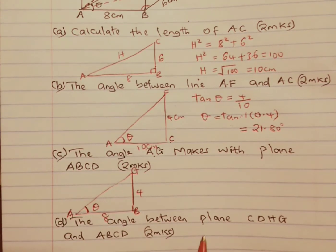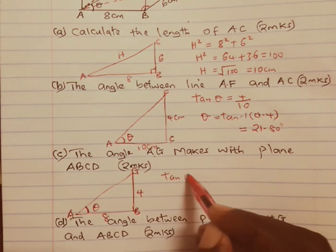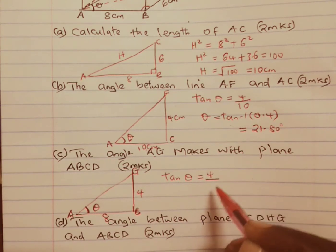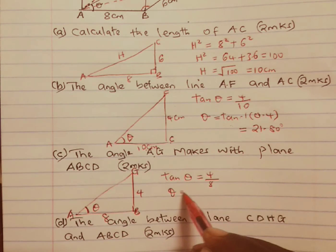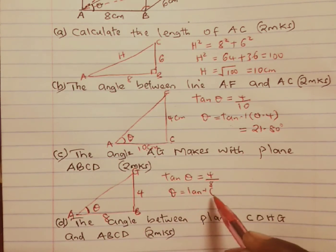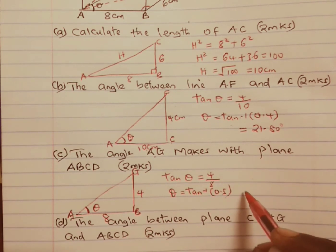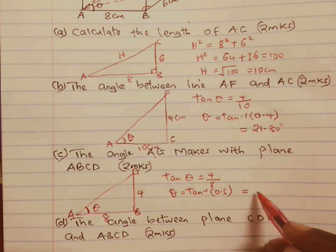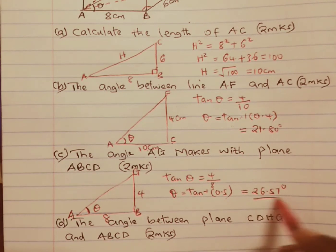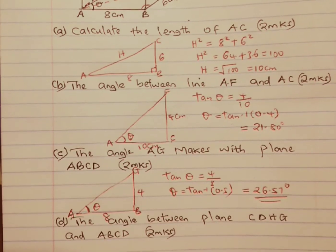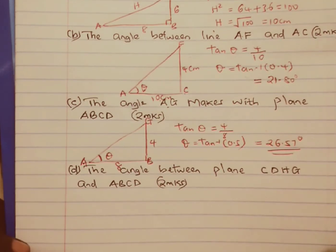We again have the opposite and the adjacent sides. To get theta we take the tan inverse of 4 out of 8 which is 0.5. Pressing tan inverse of 0.5 gives us 26.57 degrees, and that is the answer to part C of the question.